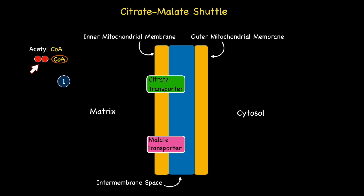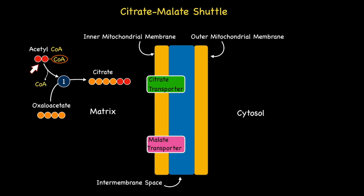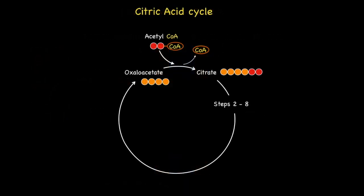Step one begins with the two carbons from Acetyl CoA being added to the four carbons from oxaloacetate to give the six carbon compound known as citrate. During step one, the CoA from Acetyl CoA is cleaved off as seen in the illustration. Those with a good working knowledge of metabolism may also recognize this first step as being the first step of the citric acid cycle, and they would be 100% correct.